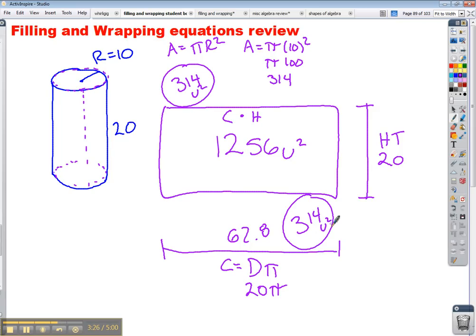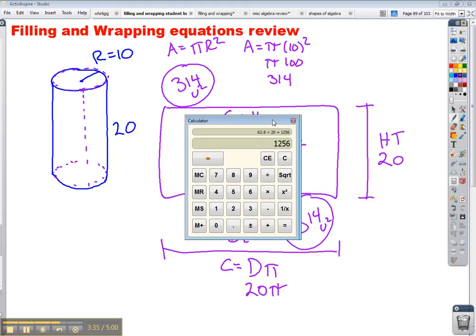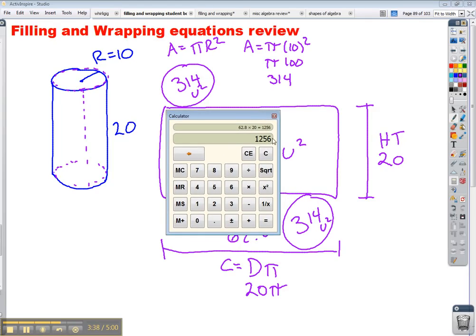My last piece to find the surface area of this shape is to add these three areas together. I have the area of the rectangle plus the area of the top plus the area of the bottom. I get a surface area of 1,884 units squared. This is units squared because we're talking about area, which is in two dimensions.